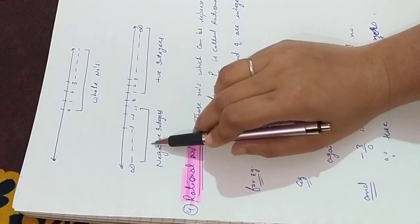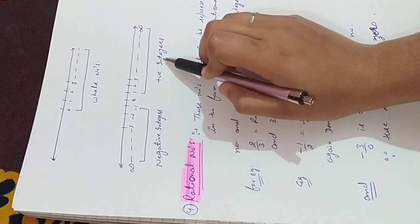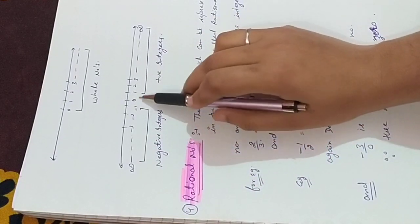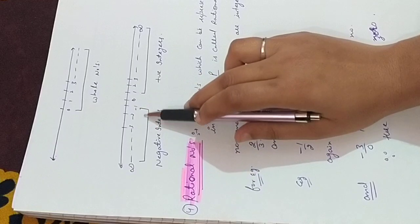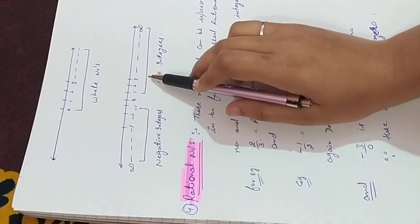0 is not included in negative numbers and in positive integers. Also, 0 is not included. This is called negative and positive integers.